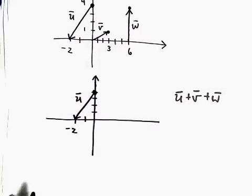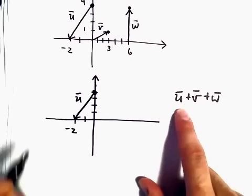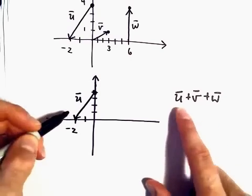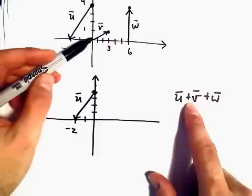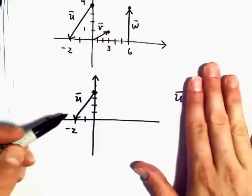When we create new vectors, when we add vectors together, in terms of drawing them, what I'm going to do next is I'm going to take vector v. Wherever u stops,